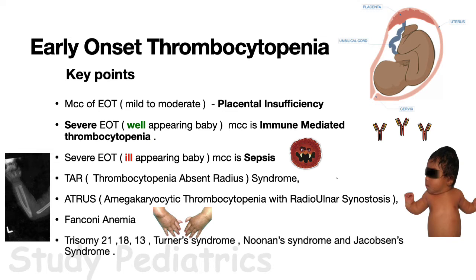Other rare causes of early onset thrombocytopenia include trisomy 21, 18, 13, Turner syndrome, Noonan syndrome, and Jacobsen syndrome.